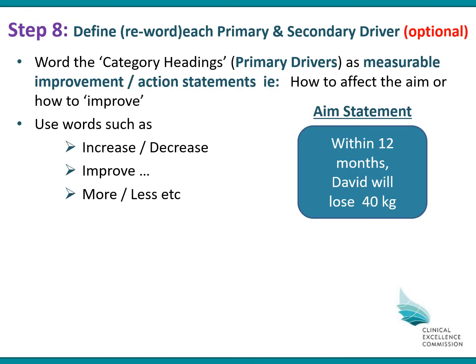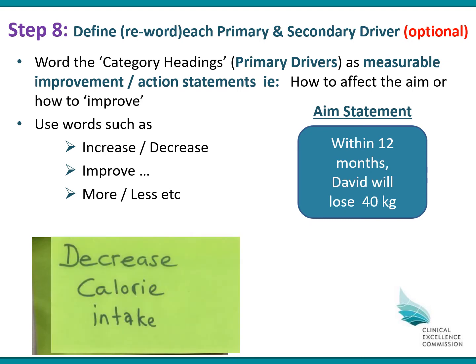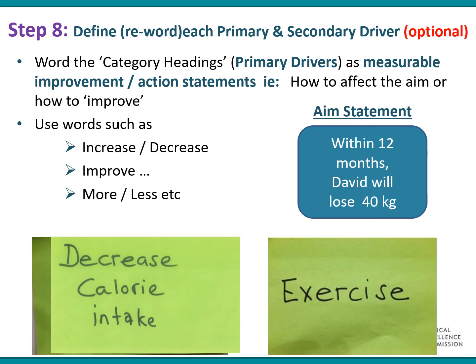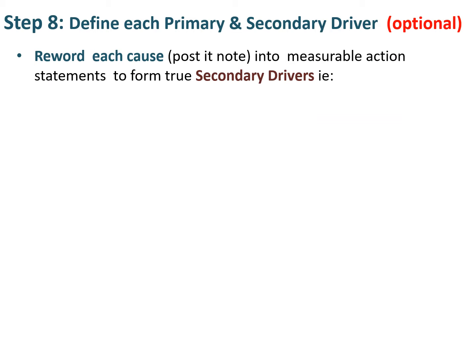Step eight is where we define each primary and secondary driver. This is an optional step — you can leave the post-it notes as they were, or reword the primary drivers as measurable improvement or action statements to show how they affect the aim. For David, what does he need to do with calories to lose weight? He needs to decrease his calorie intake. What does he need to do with exercise to lose 40 kilos? Increase his exercise to burn more calories. This is just flipping the wording of the primary drivers to show how they'll affect the aim.